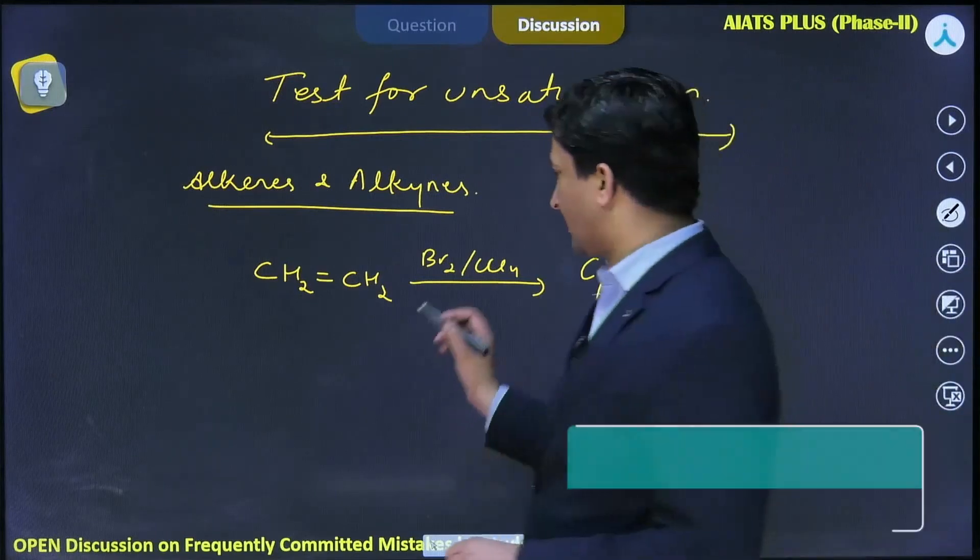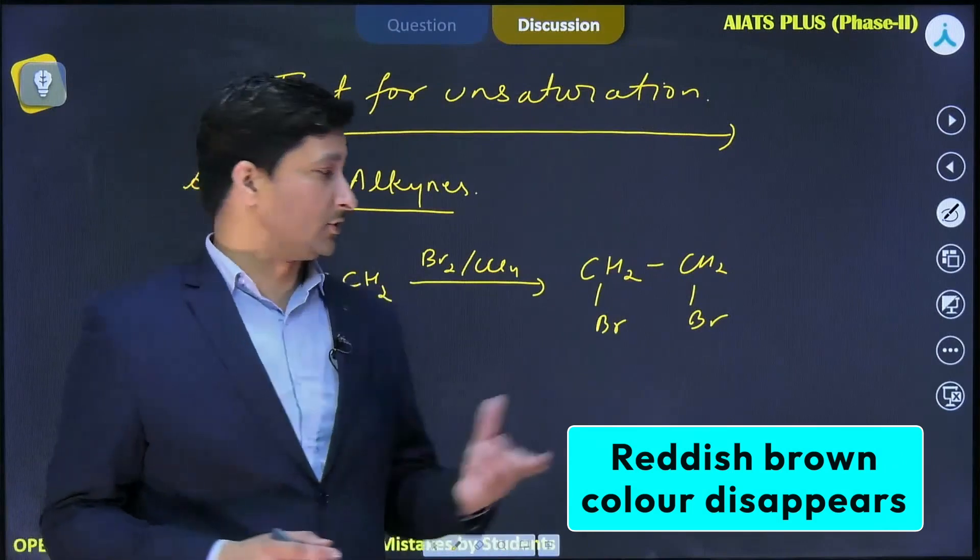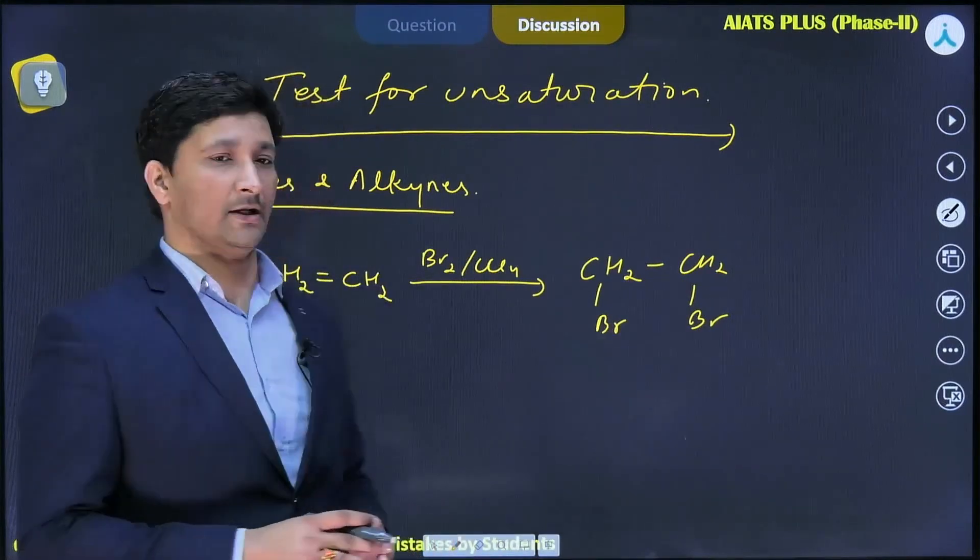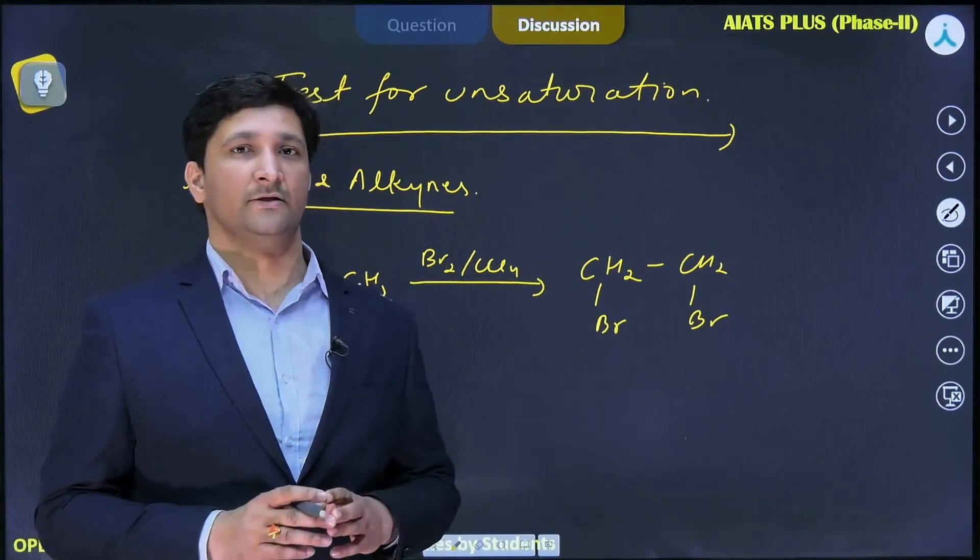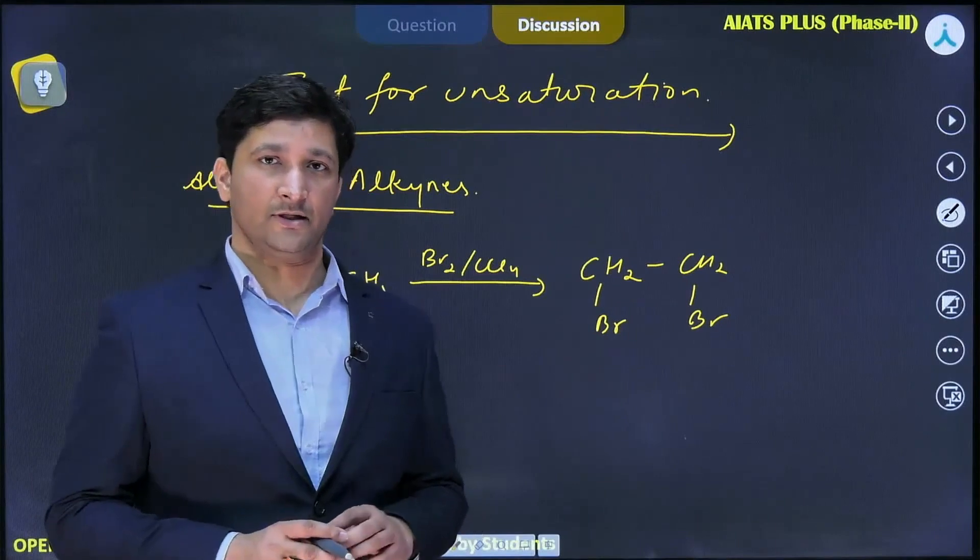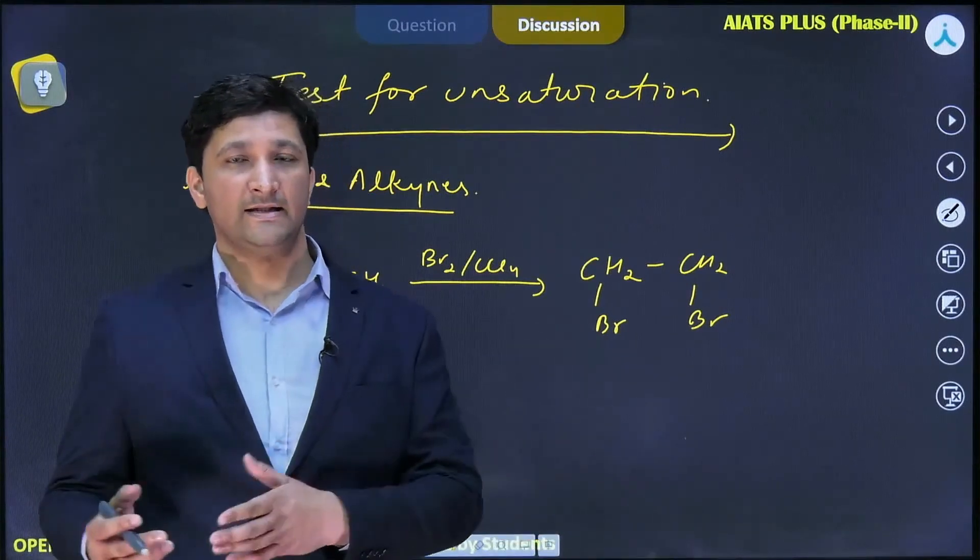Due to this reaction, the reddish brown color of the bromine CCl4 will disappear because these are white in nature. So the reddish brown color will disappear and you can easily distinguish between compounds which are saturated or unsaturated. Generally alkynes can be distinguished from alkenes by this method.